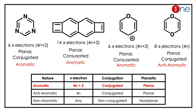The first compound, if you look at it, is conjugated with 6 π electrons, so it's definitely aromatic. The second one is 14 π electrons — it is also a 4n+2 system, so it is also aromatic. The third one is also 6 π electrons, planar, and conjugated, so it is aromatic.